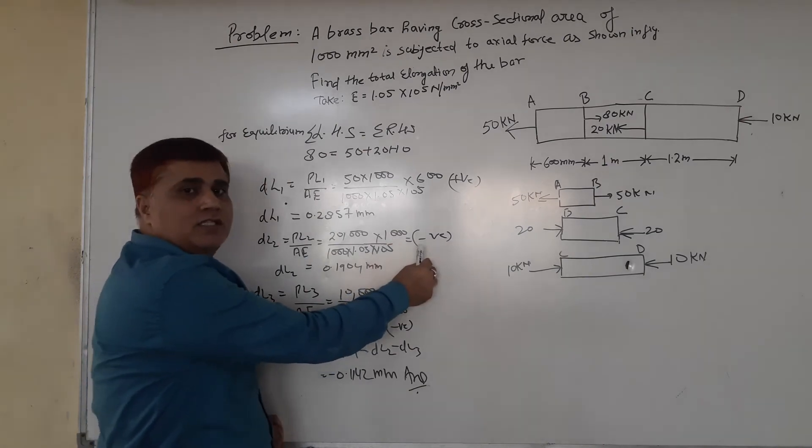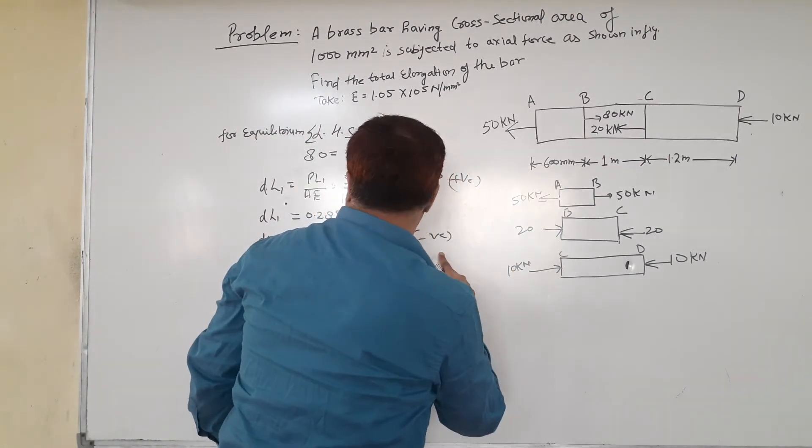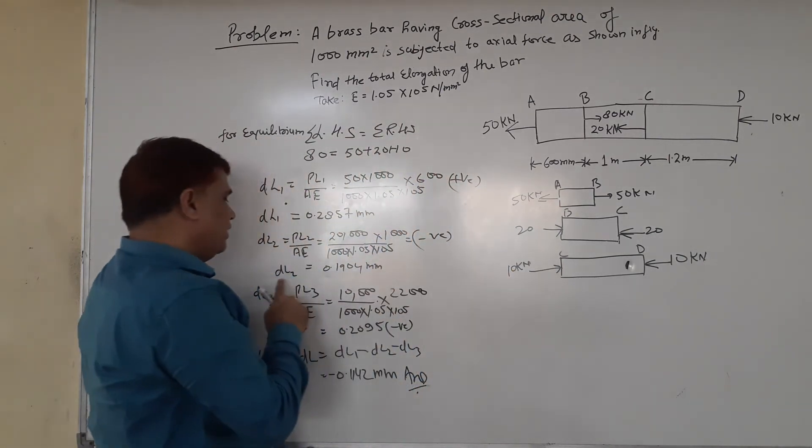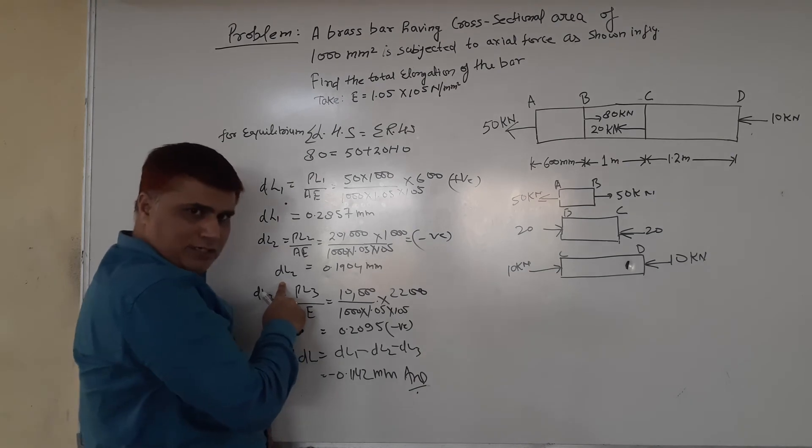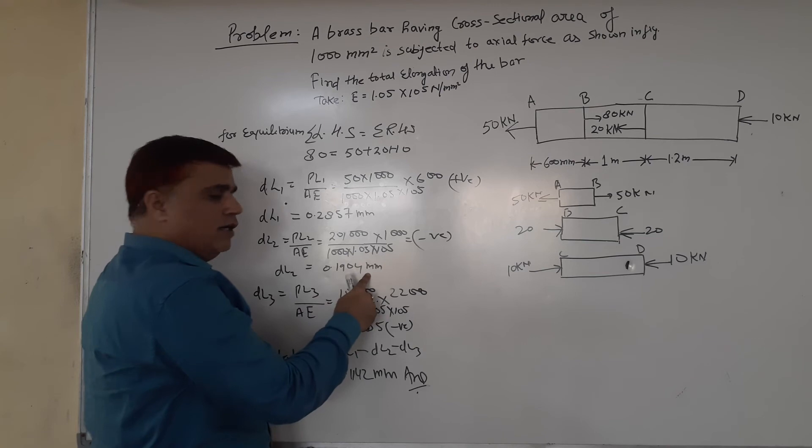This will be negative because this is a compressive zone. We get the value of ΔL₂ = -0.1904 mm.